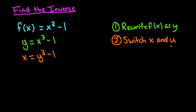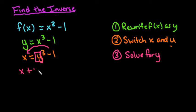Our next step is to get y by itself. So step three is to solve for y. Our first step in getting y by itself is we would move the one to the other side, so it would become positive one.